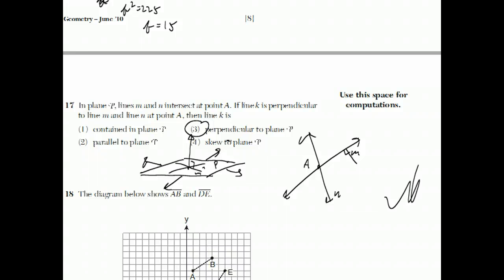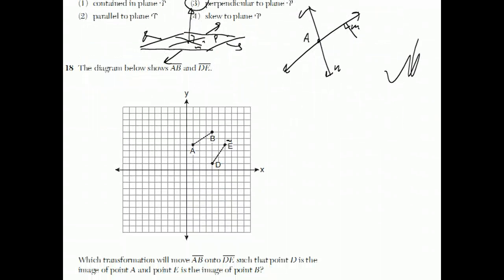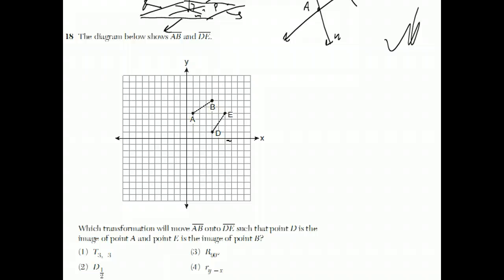Moving on to question 18. The diagram below shows AB and DE. Which transformation will move AB onto DE such that point D is the image of point A and point E is the image of point B? Pause for a moment or two. Try to ponder that question. I'm actually going to pause also. Okay. So we have line AB, and we want to do some kind of transformation. If you translate three to the right and three, make sure that's what, yeah, there needs to be a minus there. So if you translate three right and three down, one, two, three, one, two, three, A does become D.